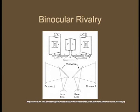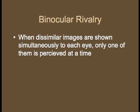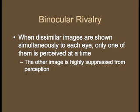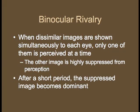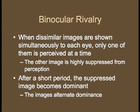In binocular rivalry, two dissimilar images are shown simultaneously to each eye, generally using a stereoscope, as pictured here. The observer, however, only perceives one of the images at a time. This is said to be the dominant image. The image that is not perceived is said to be suppressed. After a short period of time, generally a few seconds, the suppressed image becomes dominant, and the images alternate dominance.